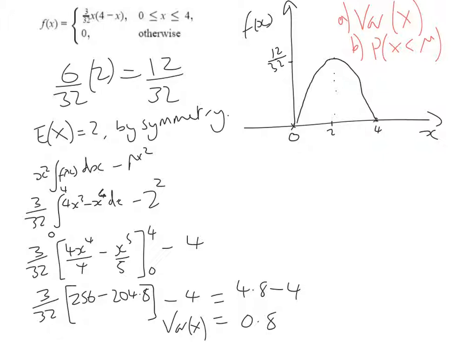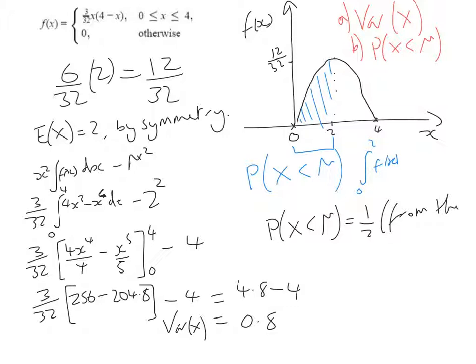And then finally, I'm going to look at finding the probability that x is less than the mean. Well, we know that the mean here is 2. So one way we could do it is integrate our function between 0 and 2. And that would tell us the area less than the mean. However, because the graph is symmetrical, we know that half of it is less than the mean. And the entire area under the curve is 1. So we know that the probability that x is less than the mean is a half. And that's from the symmetry of the graph.